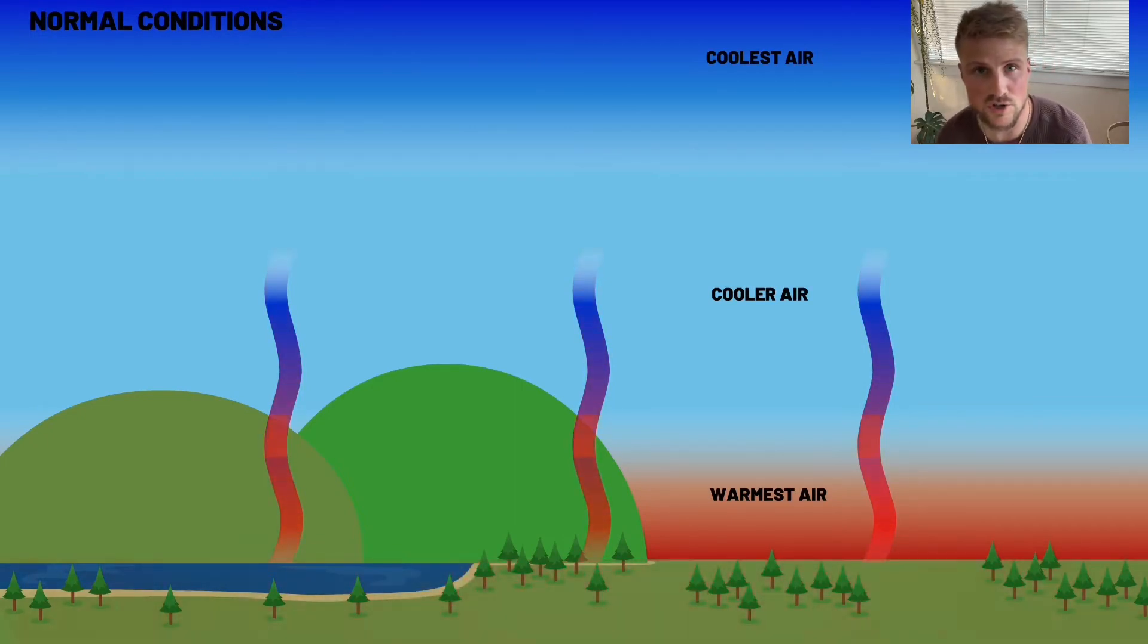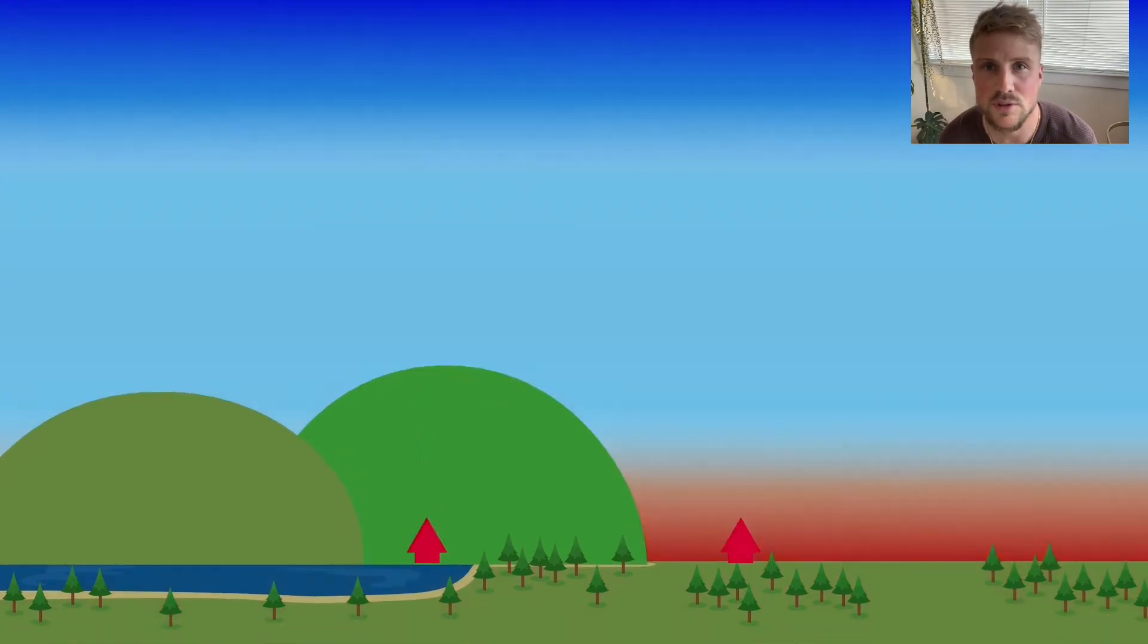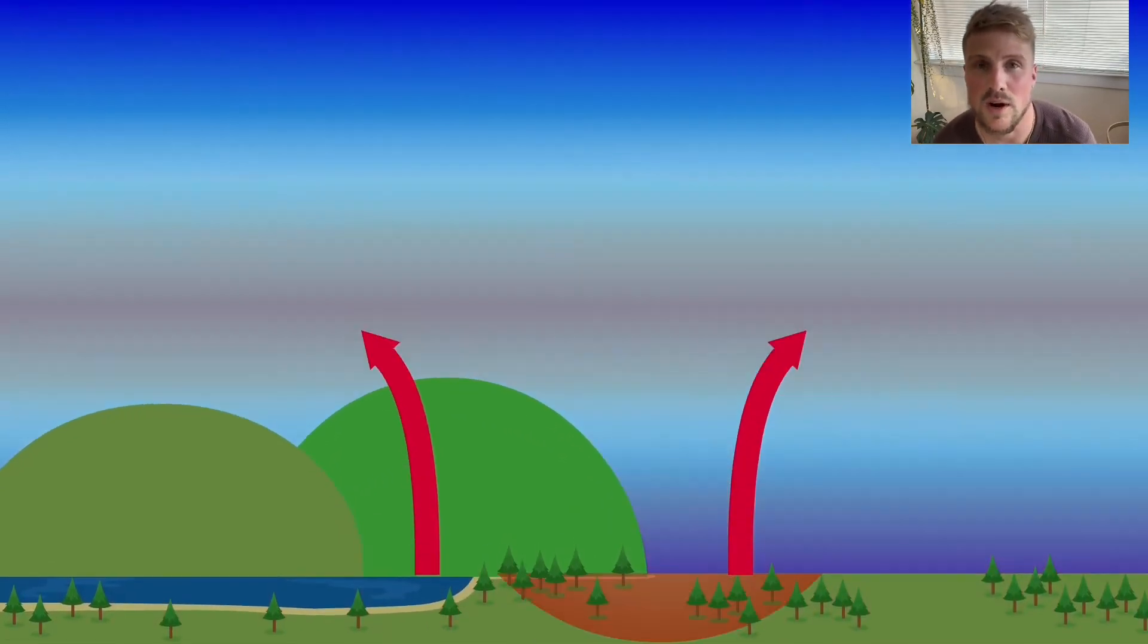In a temperature inversion, the air mass at higher altitudes is actually a higher temperature than the air at lower altitudes. In other words, the temperature is flipped and cooler air is near the surface and warmer air up higher.